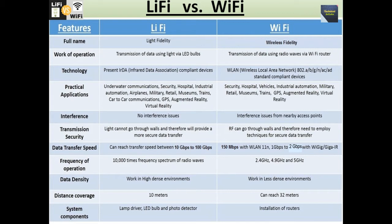For practical applications: Li-Fi is used in underwater communications, security, hospitals, and virtual reality. Wi-Fi applications include security, hospitals, vehicles, industrial automation, military, retail, museums, trains, GPS, augmented reality, and virtual reality. For interference: Li-Fi has no interference issues, while Wi-Fi has interference issues from nearby access points. For transmission security: Li-Fi light cannot go through walls and therefore provides more secure data transfer, but Wi-Fi radio frequency can go through walls and therefore needs techniques for secure data transfer.